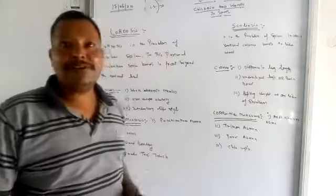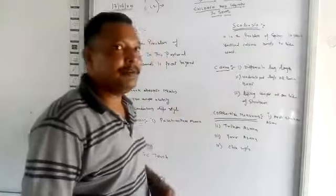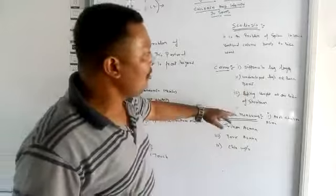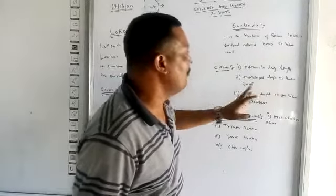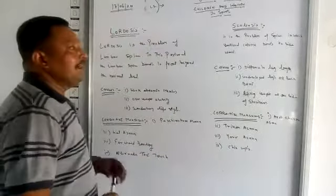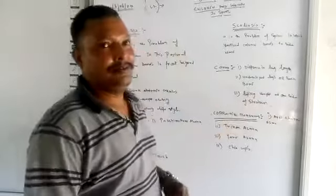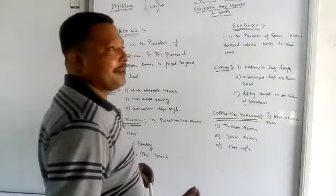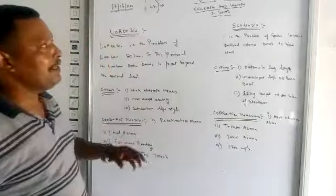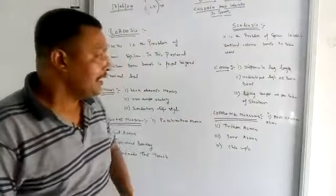The causes of Scoliosis postural deformity: Number one is a difference in leg length — if a person has a by-birth difference between leg lengths, that may also cause Scoliosis postural deformity because the body weight shifts towards one side, either left or right. Next is undeveloped legs or backbone — if a person has undeveloped legs or backbone due to heredity or conditions before or after birth, that also causes Scoliosis. Next is lifting weight on one side of the shoulder — if a person has a habit of lifting weight on only one side, either right or left, that may also cause Scoliosis postural deformity.